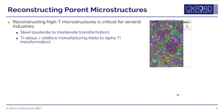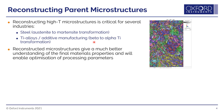Now let's move on to data processing. The biggest new feature introduced into Aztec Crystal is the reconstruction of parent microstructures. This is for samples that have undergone displacive phase transformations — primarily steels undergoing austenite to martensite transformations, and titanium alloys in the additive manufacturing sector, where we get, for example, beta to alpha titanium transformation. By reconstructing the parent microstructure, it gives researchers a much better understanding of how processing parameters need to be adjusted to ensure the desired final materials properties.